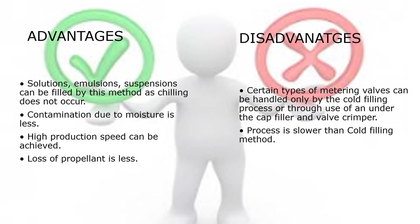Advantages of pressure filling apparatus: solution, emulsion, and suspensions can be filled as chilling does not occur; less contamination due to moisture; high production speed; and less loss of propellant. Disadvantages: certain types of metering valves can be handled only by cold filling or through an under-the-cap filler and valve crimper; the process is slower than cold filling.